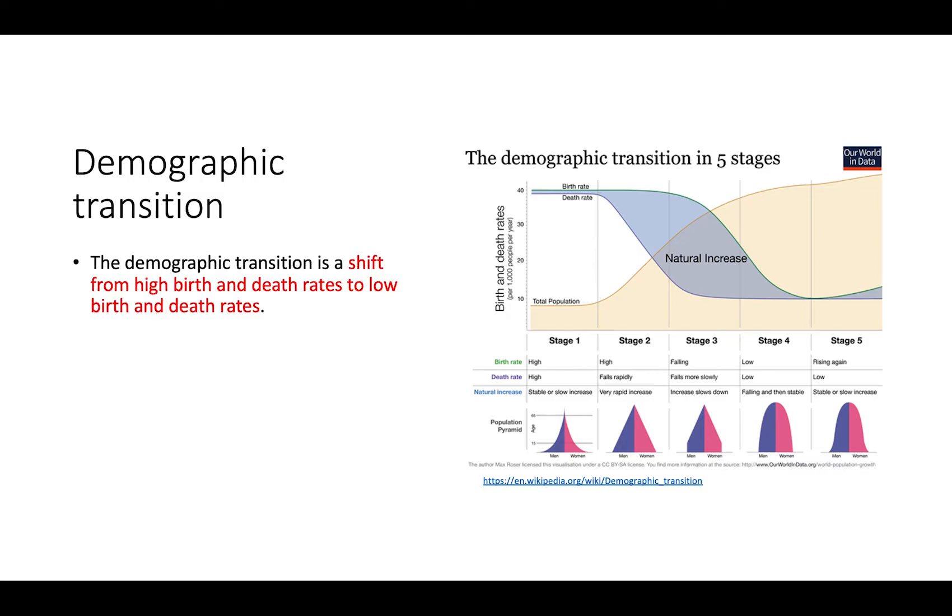The demographic transition is a shift from high birth and death rates to low birth and death rates. In this graph, we can see that in stage one of the demographic transition we have a very high birth rate and death rate. As we move towards stage five, we see both the birth rate and death rate start to fall.